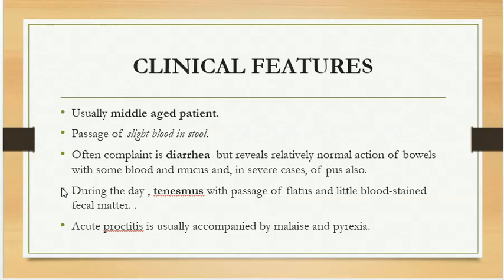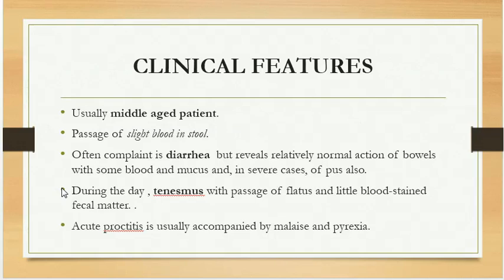These patients also complain of tenesmus — a painful defecation with inadequate evacuation where the patient has urge but cannot pass. There is tenesmus with passage of flatus and little blood-stained fecal matter. Acute proctitis is usually accompanied by malaise and pyrexia, meaning it is associated with constitutional upset including myalgias and pyrexia.